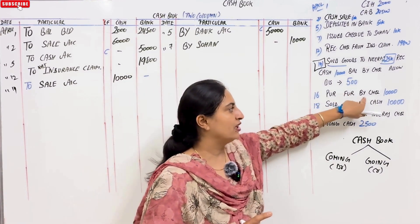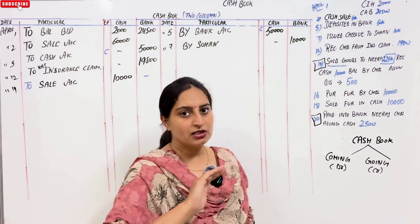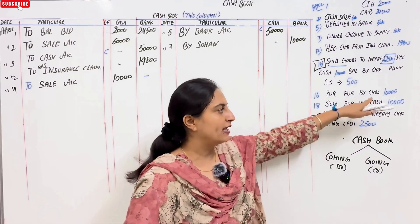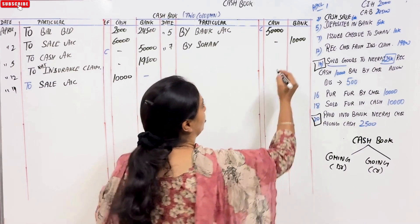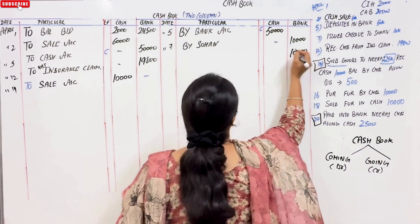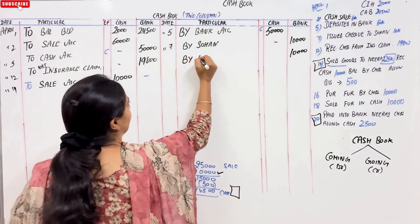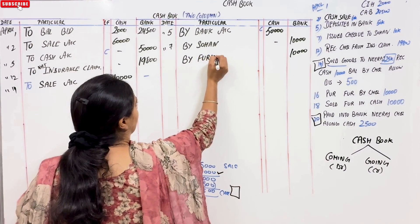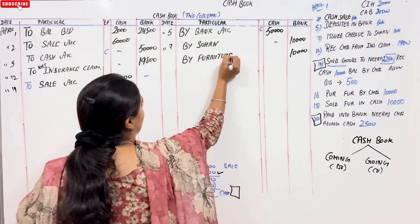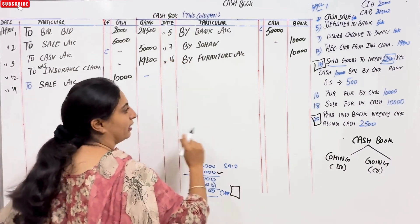Purchase furniture by cheque. You have bought furniture and payment goes from the bank column. We will write 10,000 in the bank column. And here we will write 'by furniture account' for 16,000.